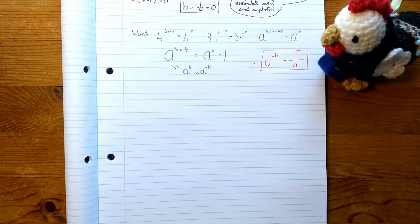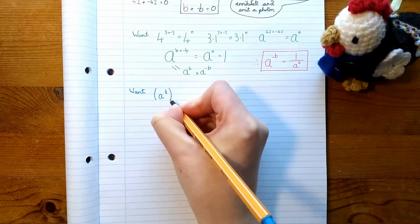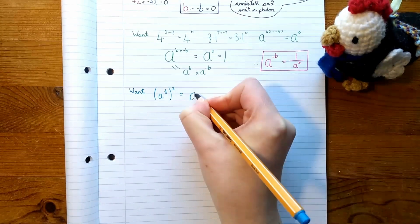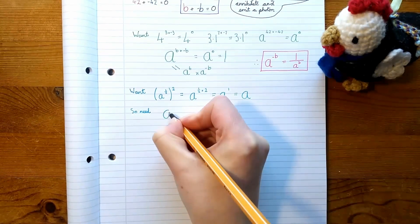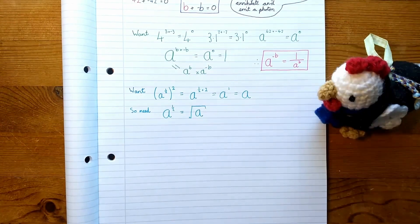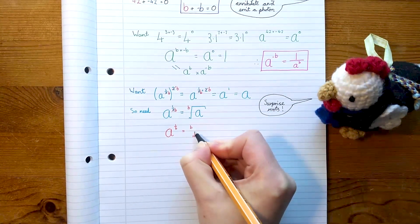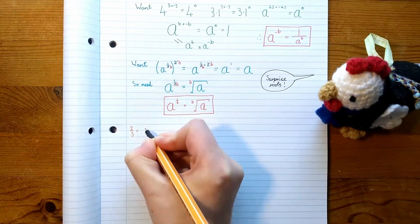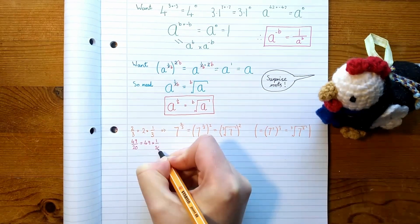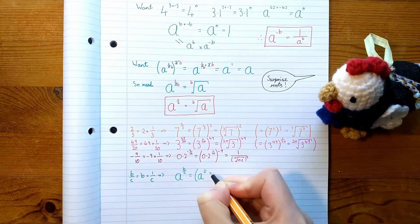We can use a similar idea for fractional powers. If we start with a to the half, we can see from our second rule that if we raise this to the power of 2, then we should get back to a to the 1, which is a. So we want a power of a half to mean a square root. Our logic works if we choose something other than 2, so there's only one sensible choice for a to the 1 over b — it's the b-th root of a. From there, it's easy to pin down all the other fractions by noticing that b over c is just b times 1 over c.